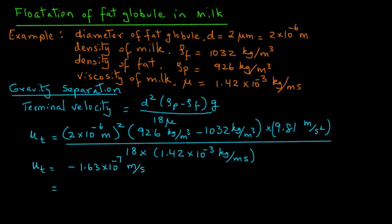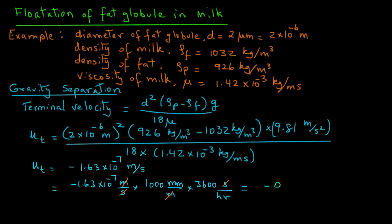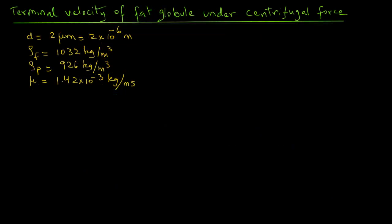We can convert these units from meters per second to millimeters per hour. We have −1.63×10⁻⁷ m/s times 1000 mm/m times 3600 s/hr, and we get −0.59 mm/hr. So the fat globules will be rising at a velocity of about 0.6 mm/hr. That tells us it is a very slow process, but the fat globules will be moving up to the top layer.